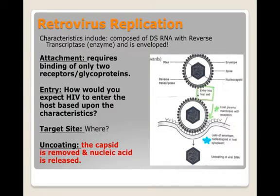The final piece to our puzzle is about how some viruses go into a host cell, take over, but don't actually start to make viruses right away. There's a group of viruses known as the retrovirus family, and their characteristics include the fact that they're composed of double-stranded RNA — two pieces of RNA.